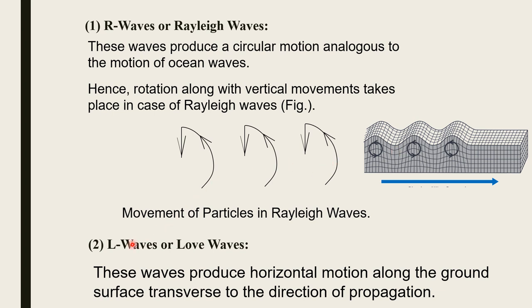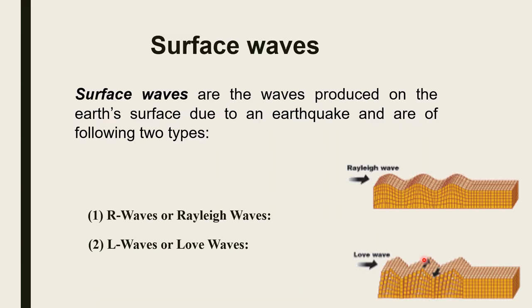L waves or Love waves produce horizontal motion along the ground surface, transverse to the direction of propagation.